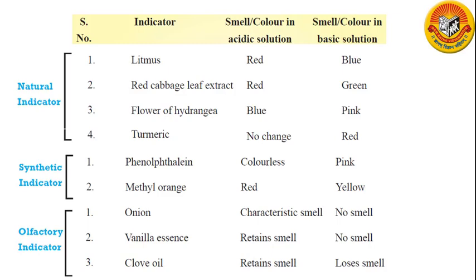So we have understood how these indicators are useful to check whether a given solution is acidic or basic. You have to remember all the types of indicators and their change of color or smell when put in acid or base. There is one more indicator called the universal indicator that we will see later in this chapter.